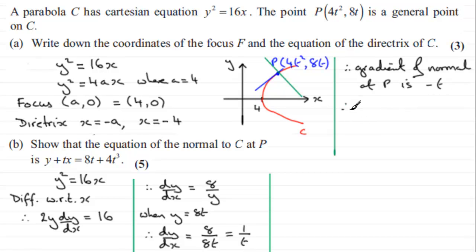So, that means we're in a position now to get the equation, the general equation of the normal. Okay, just give a little intro here. The equation of the normal at P is, and so it's going to be y minus y1. Y1 is going to be 8t equals m, the gradient, which is minus t for the normal, multiplied by x minus x1, and x1 is 4t squared.